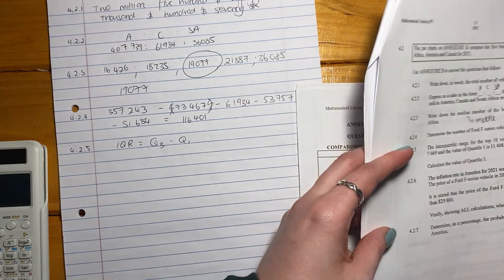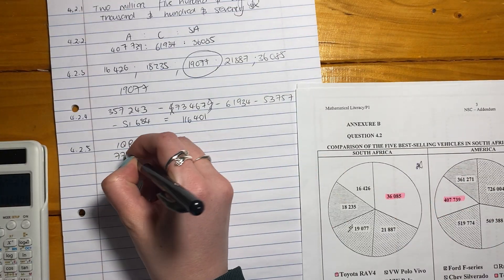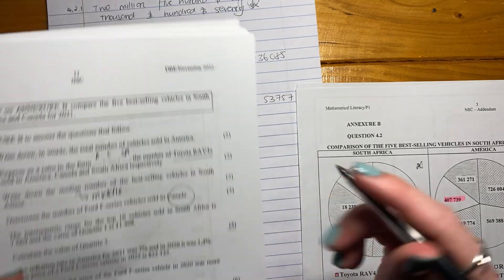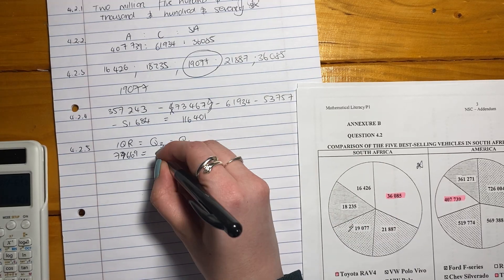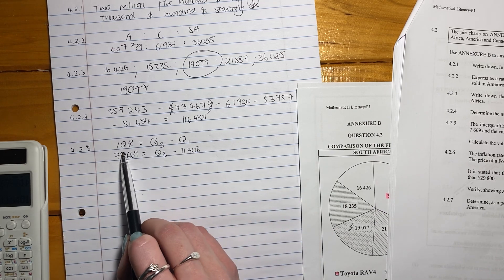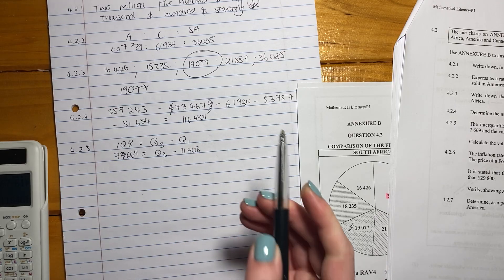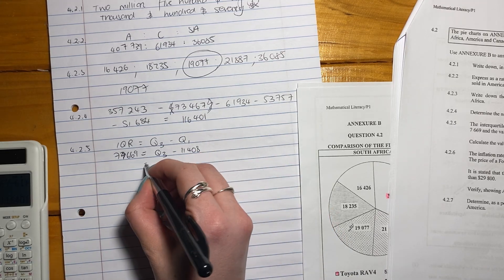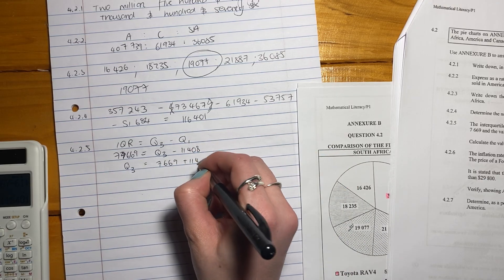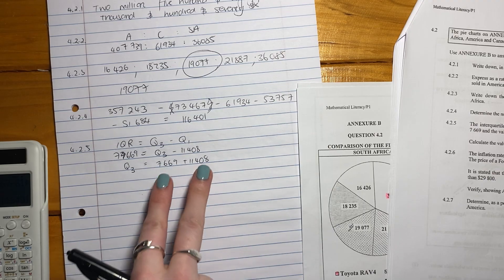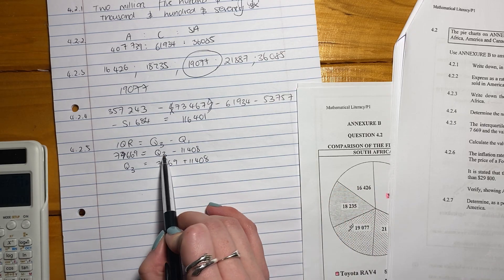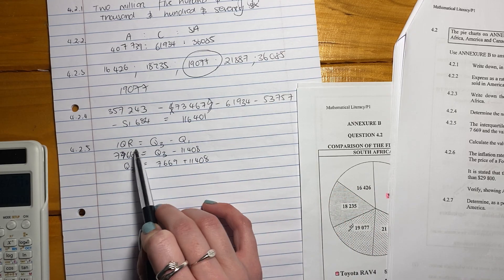So now my inter-quartile range from what's been given here is 7,669. Quartile 1 is 11,408. And they're wanting us to find quartile 3. If the inter-quartile range is quartile 3 minus quartile 1, then you should be able to see that quartile 3 is actually just going to be these two amounts added together. If I have a number and I'm subtracting this number from it and it gives me that number, this number has to be bigger than both of these numbers.